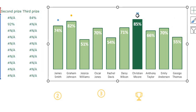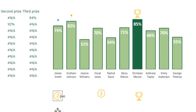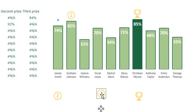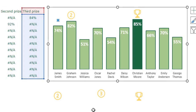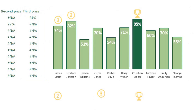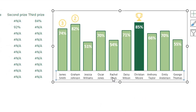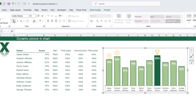Select the first price picture, press Ctrl+C, click the dot for the first price in the chart, and press Ctrl+V — the picture appears. Do the same for the second price: Ctrl+C, select its dot, Ctrl+V. And for the third price: Ctrl+C, select its dot, Ctrl+V. Delete the standalone pictures from the sheet as they are no longer needed.